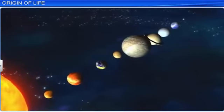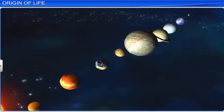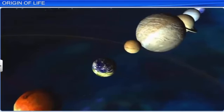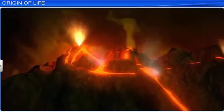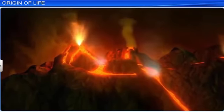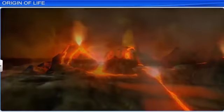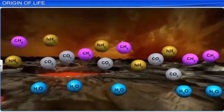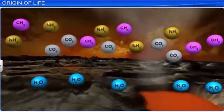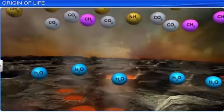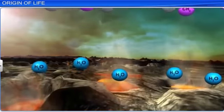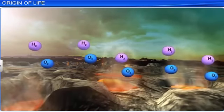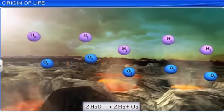One of the galaxies known to us is the Milky Way, which contains the solar system, and the earth is one of the planets in the system. At the time of its formation, there was no atmosphere on the earth. Its surface was covered by water vapor, methane, carbon dioxide and ammonia released from the molten mass. Gradually, the ultraviolet rays of the sun broke up the water, which was in vapor state, into hydrogen and oxygen.